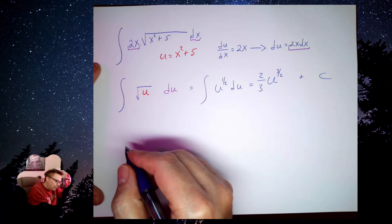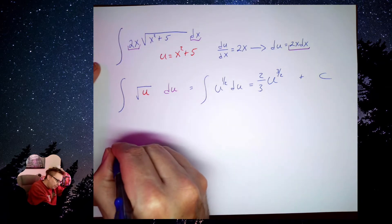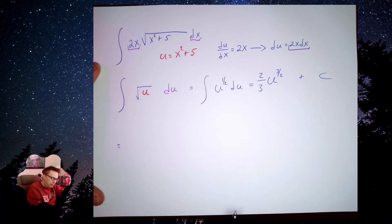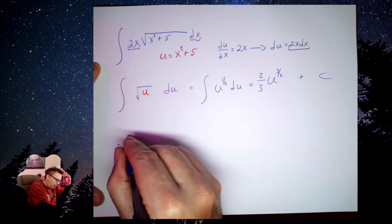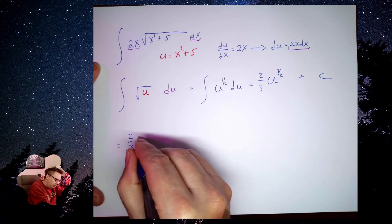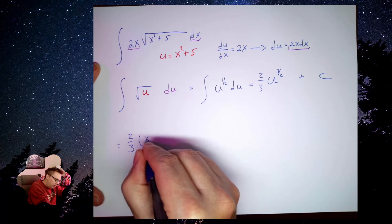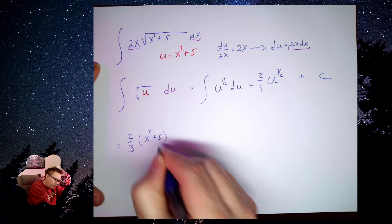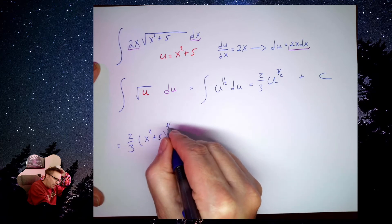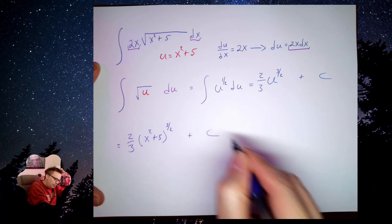So making my final substitution, we see that the original problem is equal to 2 thirds, x squared plus 5, raised to the 3 halves power, plus a constant.